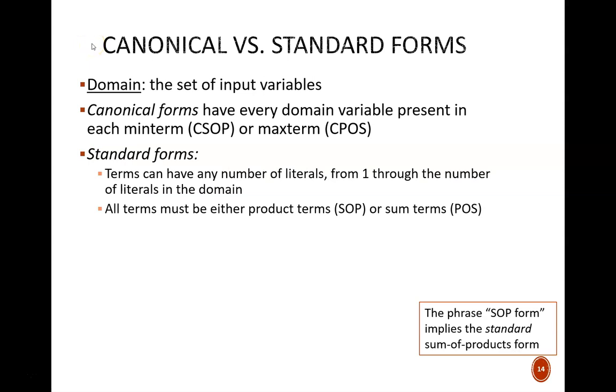A key term to define the difference between these forms is domain. Domain is the set of input variables. For example, in the equation s equals ab' or a'b, the domain consists of two input variables, a and b. In a canonical form, every domain variable must be present in each term.